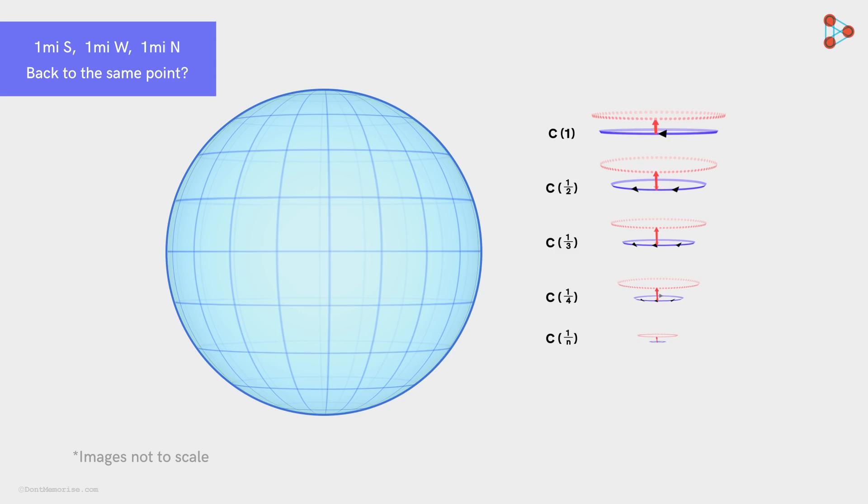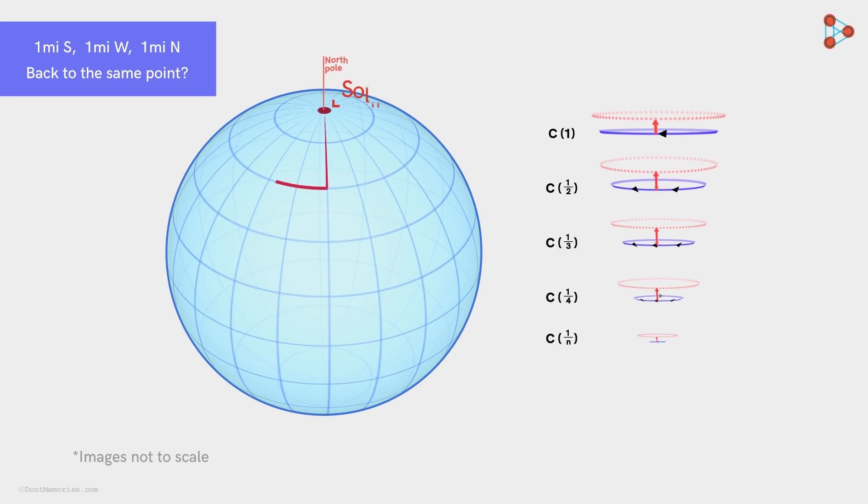There are infinite solutions to the problem. These solutions can be mentioned as North Pole and the points on the circles one mile north of the circles in the Southern Hemisphere with circumference one over n, with n being a natural number.